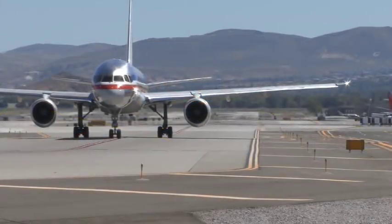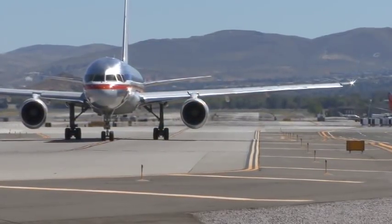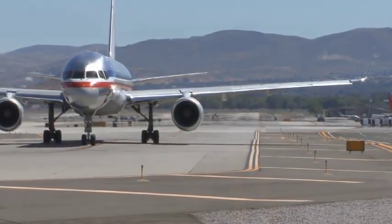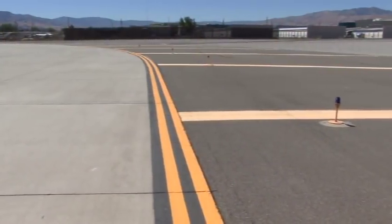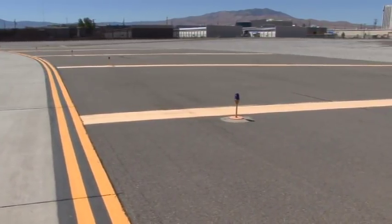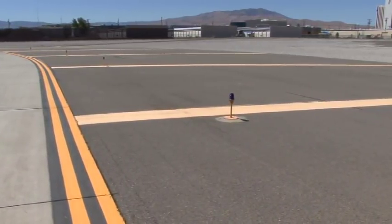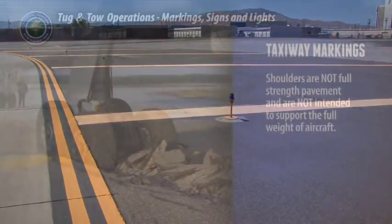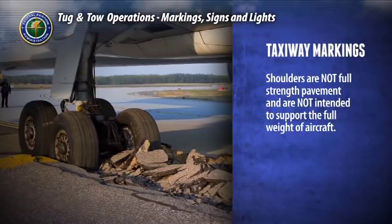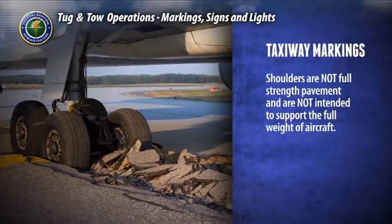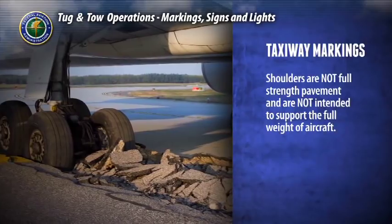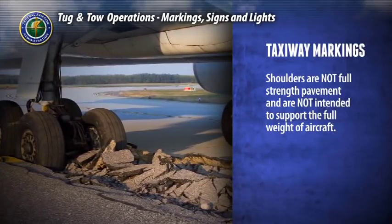Taxiway edge markings have a single or double yellow stripe, and aircraft should not cross outside these markings. Taxiways can also have shoulder markings. These paved areas are used to prevent jet blast and water erosion from damaging the pavement. Shoulders are not full strength pavement and are not intended to support the full weight of an aircraft, so it is critical that you do not let the aircraft cross the edge markings into the shoulder area.